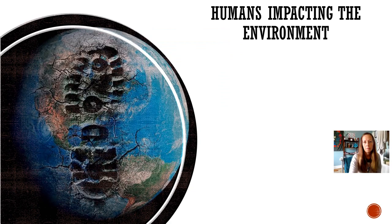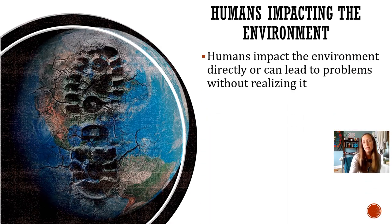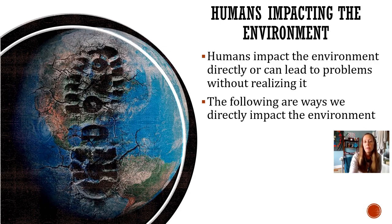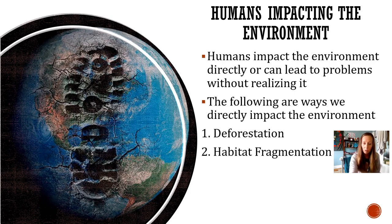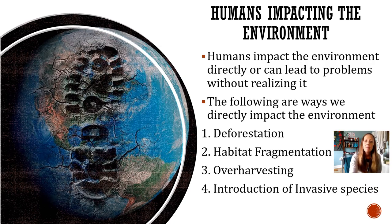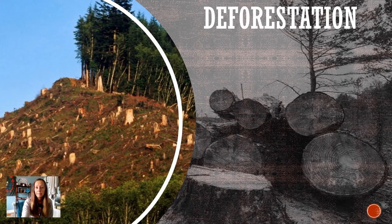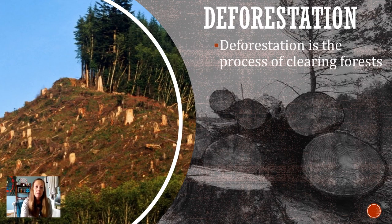Humans can impact each one of these systems. Humans impact the environment in many ways, and mostly when we impact the environment we're leading to problems. We don't always use resources appropriately. The main ways we impact the environment are: deforestation, habitat fragmentation, overharvesting, introducing invasive species, and causing pollution.